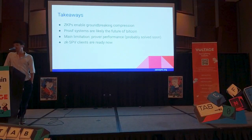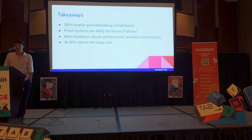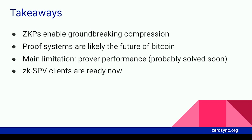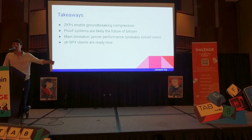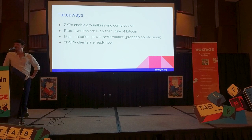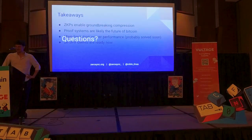Takeaways: ZKPs enable groundbreaking compression — I think that's just a fact. It's really groundbreaking for the field. Because of these properties, they will likely be the future of Bitcoin or cryptocurrency in general. The main limitation currently is that the proving performance is not quite there yet. However, we'll probably solve that soon, and there is lots of evidence that it is absolutely solvable. And ZK SPV is ready now — you guys just used it. You can try to pick it apart, find bugs. Do you have any questions?